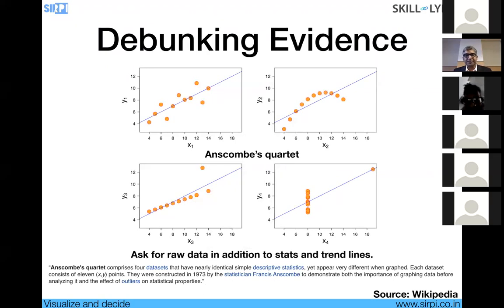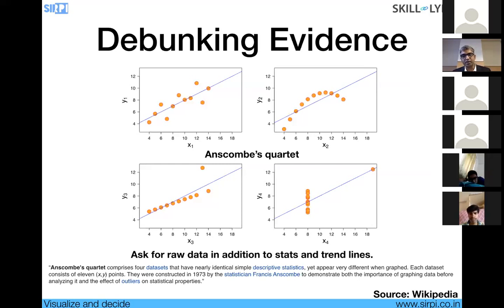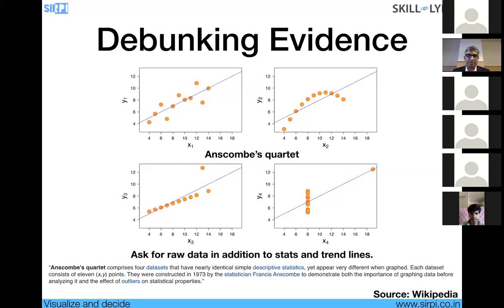Debugging evidence: in the absence of the yellow dots you see, the model lines look approximately the same — all appear linear. But this shows that in addition to statistics, we have to look at the raw data. Only when you look at the raw data do you get a good understanding. For instance, if you don't take into account that one particular outlier, the data distribution is completely different, and you might come to wrong conclusions. This is a case for debunking evidence when using data visualization.